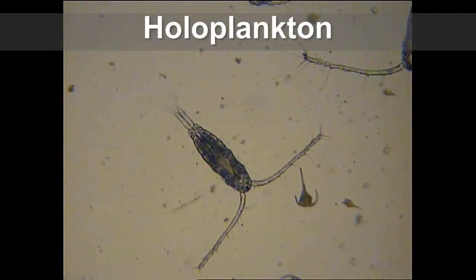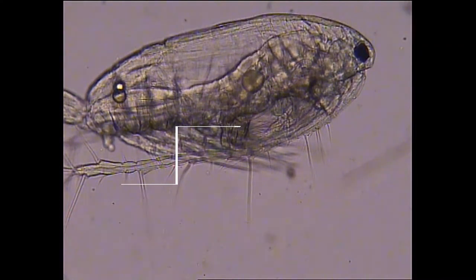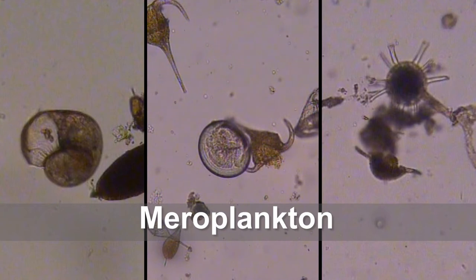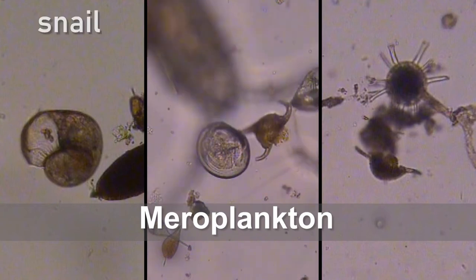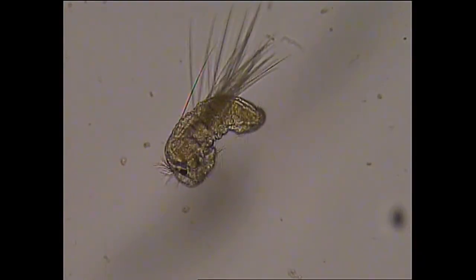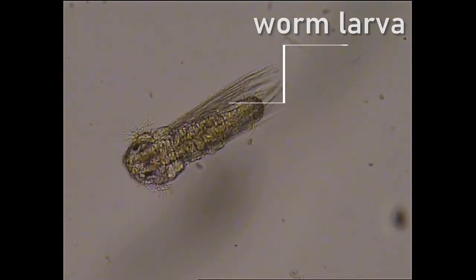Examples of holoplankton that you will see under the microscope include copepods and larvae. Examples of meroplankton that you might find include baby snails, scallops, and sea urchins. When a zooplankton is a baby we call it a larva. The plural is pronounced larvae.